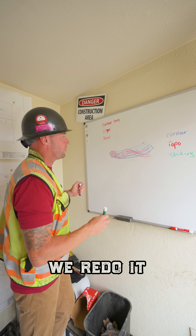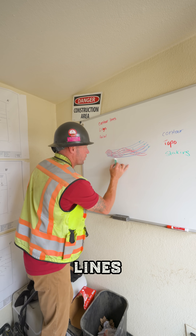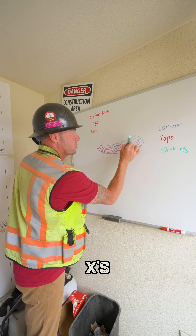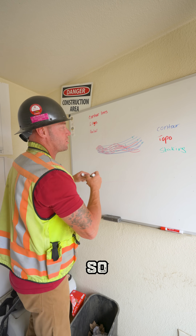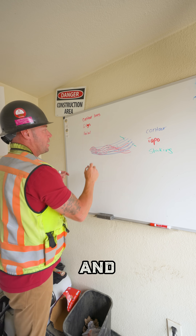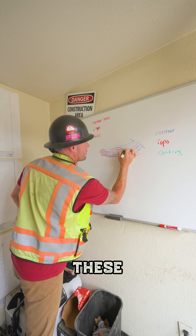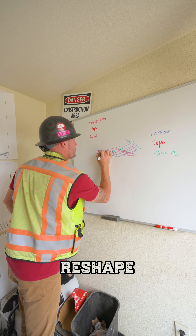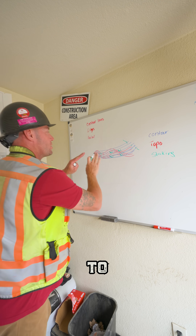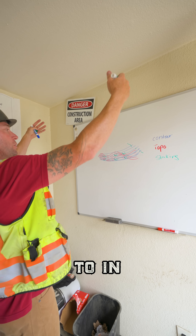Once we redo it, these are our new contour lines, and these little x's would be stakes. We'd have our limits of work on the sides of the slopes. Once you get these new contour lines, this is how we reshape the face of these slopes to make them lay the way they're supposed to and drain the way they're supposed to.